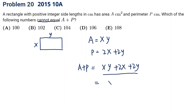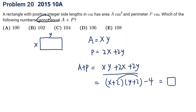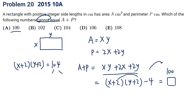We can factor this into (x plus 2)(y plus 2) minus 4, to make it equal a value. Let's try: can it equal 100? Moving the 4 over, (x plus 2)(y plus 2) equals 104. You can factor 104 as 4 times 26, and find positive integer solutions, so 100 works.